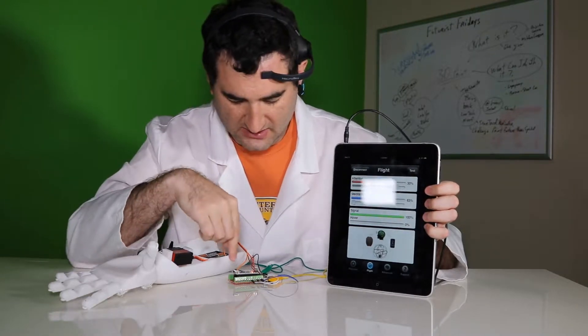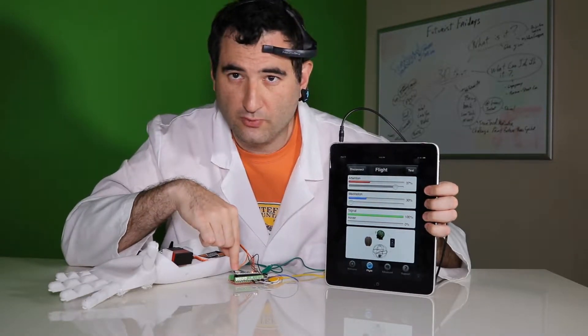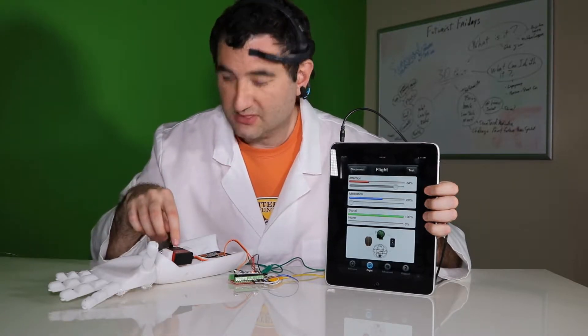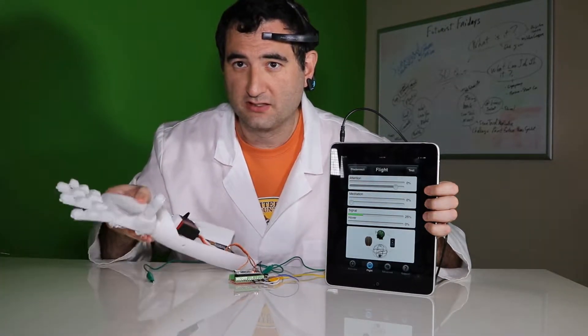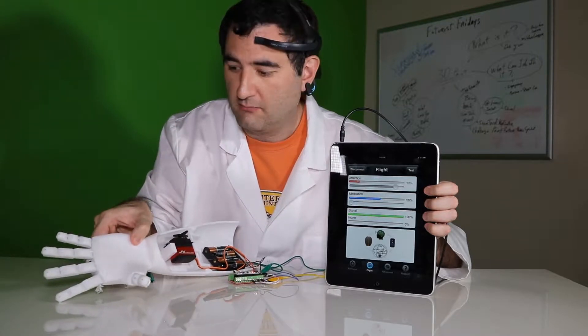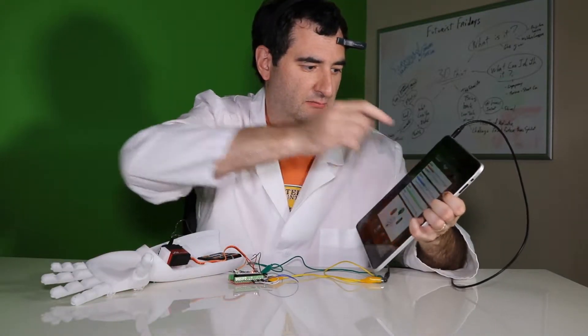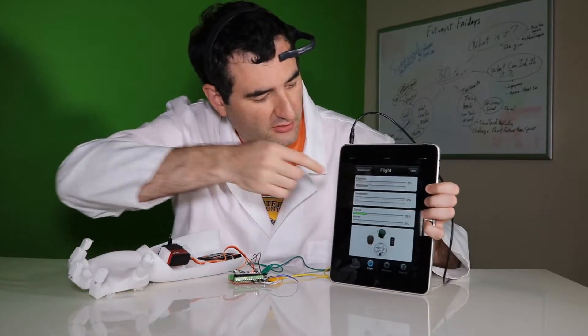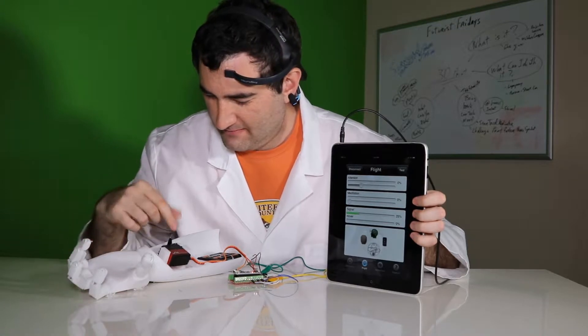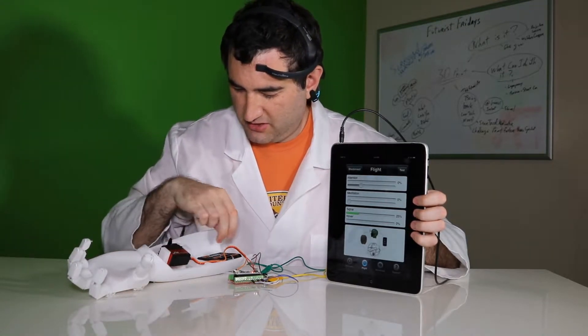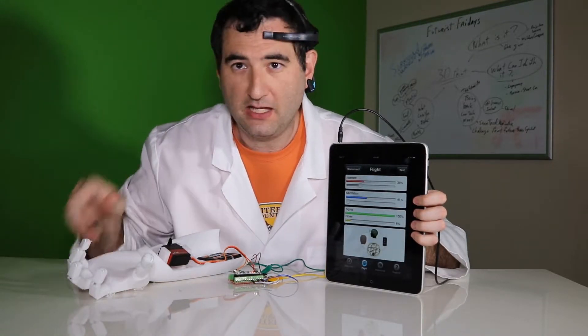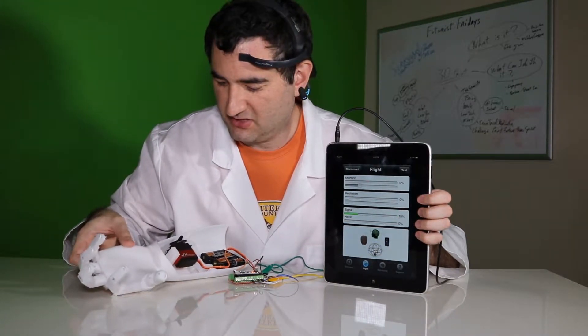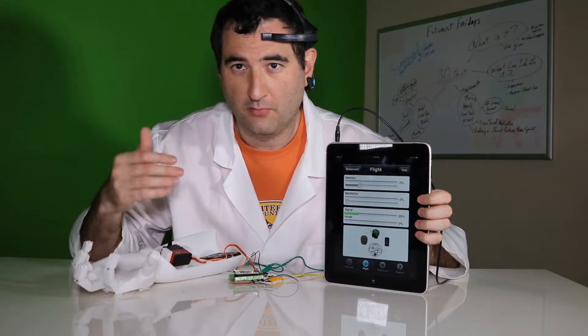This is sending a signal to this Arduino Nano. The Arduino Nano is going to send a signal to the servo that's in the wrist of the hand. Once I set a limit, there it goes. So as soon as I concentrate enough, I hit my limits, the hand will close.